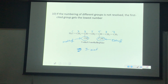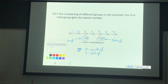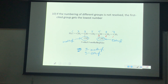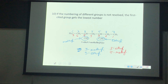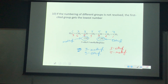Let's go ahead and draw 2-bromo, 3-chloro, 4-chloro, 2,3,4-trimethylheptane. That's a long one, but it's not that hard to draw. What you're going to do first is draw the parent chain — heptane. You're probably going to draw it as a line bond structure because you don't want to draw out all of those carbons and hydrogens.